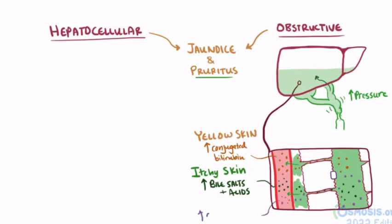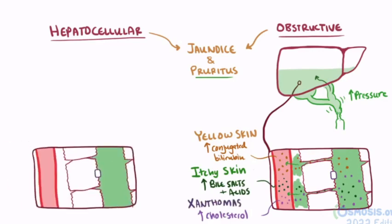Not only that, cholesterol can also deposit in the skin and lead to buildups called xanthomas. In hepatocellular cholestasis, both bile salts and conjugated bilirubin are made, they're just not excreted as well, and can leak out, leading again to pruritus and jaundice. Xanthomas, though, are not as characteristic for hepatocellular cholestasis, since bile isn't leaking through the tight junctions like it was for obstructive cholestasis.